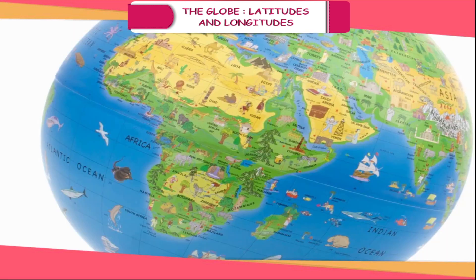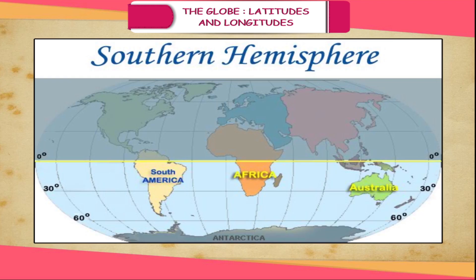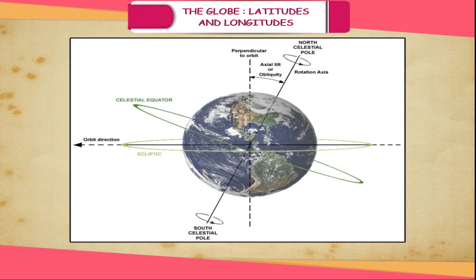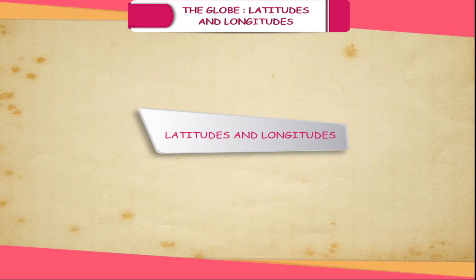The northern half of the globe is known as the Northern Hemisphere and the southern half is known as the Southern Hemisphere. Thus, the equator is an imaginary circular line that serves as an important reference point to locate places on Earth. The Earth is inclined at an angle of 66 and a half degrees from the orbital or horizontal plane. Though the globe gives us a more or less correct picture of the Earth, it cannot provide specific information about a small place and it is not easy to carry everywhere.